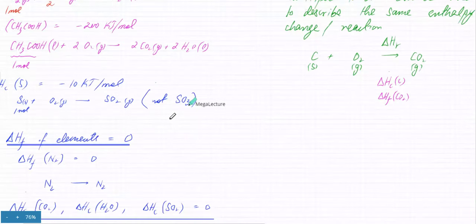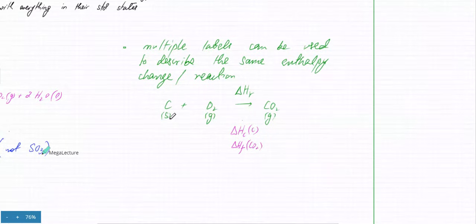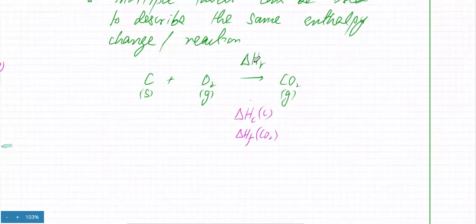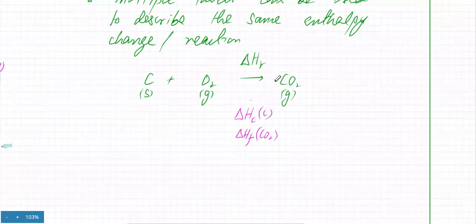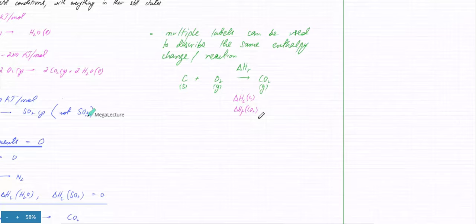Reactions can be assigned multiple labels. For example, the combustion of carbon to produce CO2 can be called the enthalpy of combustion of carbon, because one mole of carbon is being burnt in oxygen. But you can simultaneously call it the enthalpy of formation of carbon dioxide, where one mole of CO2 is formed from its elements. Both labels mean exactly the same thing.